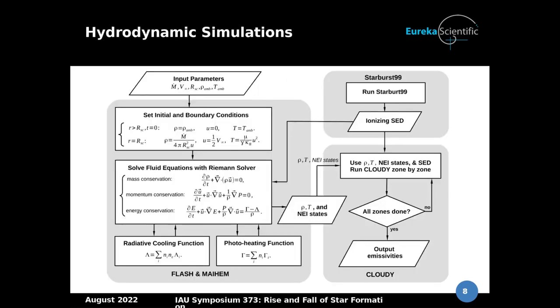In order to implement hydrodynamic simulations of superwinds we set some boundary conditions and initial conditions. I use the package MAYHEM, which is built on the FLASH hydrodynamics code. In this package the radiative cooling function and photo-heating function are coupled to the fluid equations. I use the fluid equations to make SED profiles and use these SED profiles as input for hydrodynamic simulations and photo-ionization models.